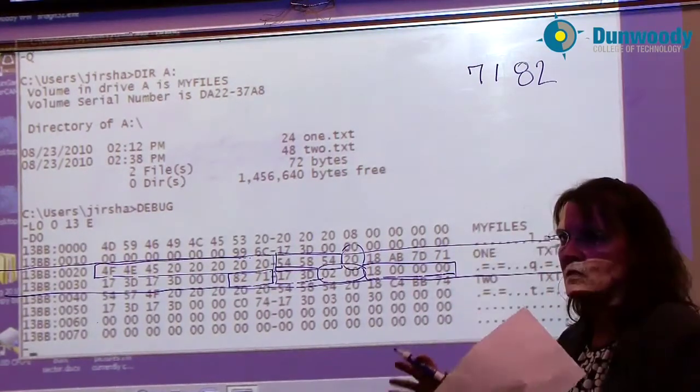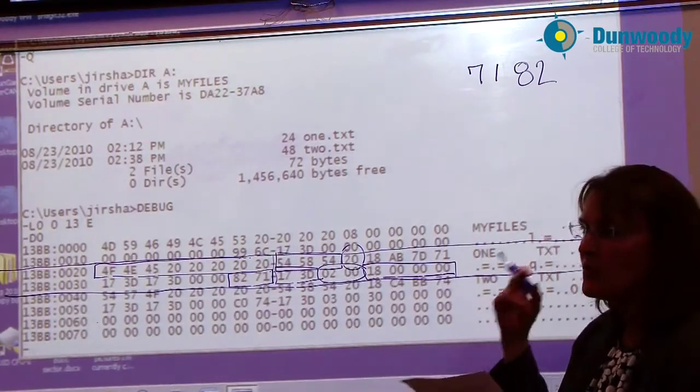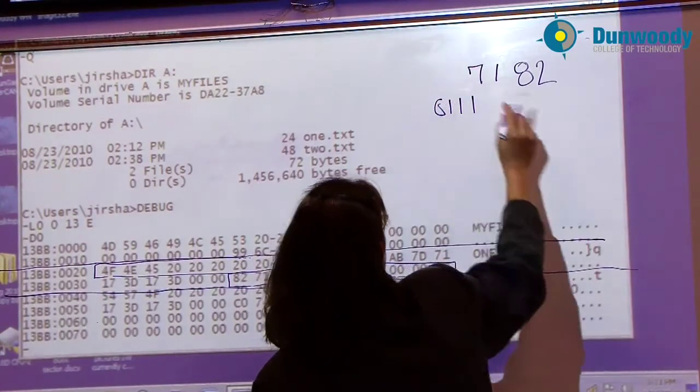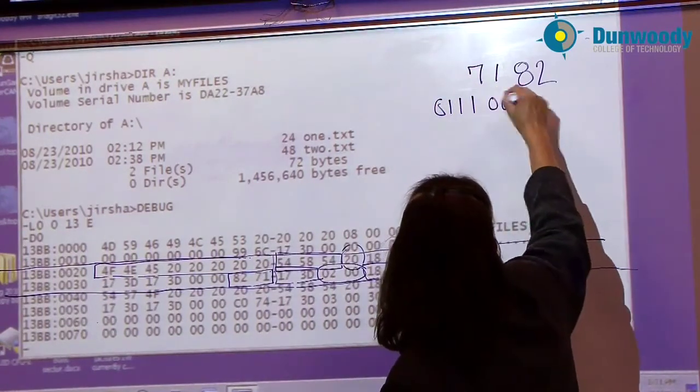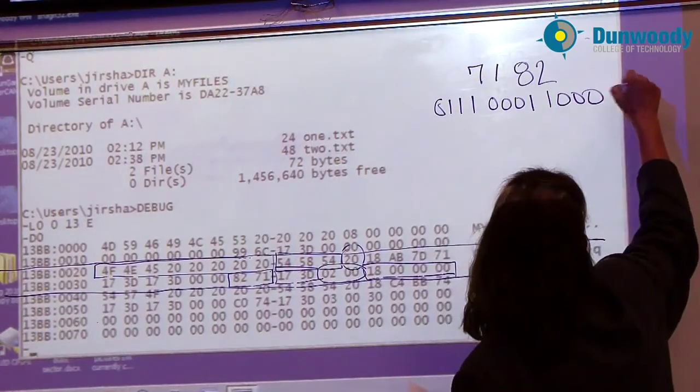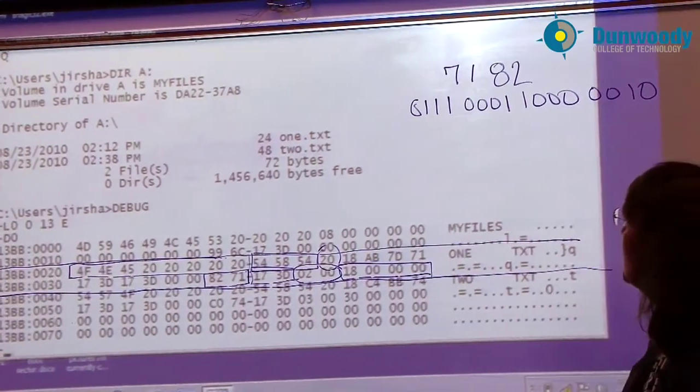Again, I'm going to have to convert that 2 byte hexadecimal number into binary because then I'm going to separate the groups of bits to come up with the - if it's time, it's going to be the hours, minutes, and seconds. 7, 0, 1, 1, 1. 1 is 0, 0, 0, 1. 8, and 2. Now I have a 16-bit binary number.